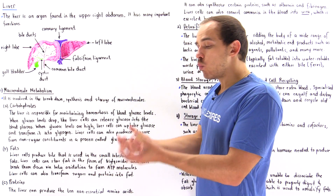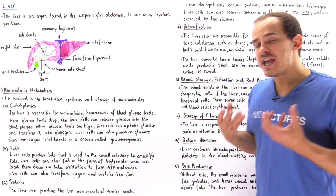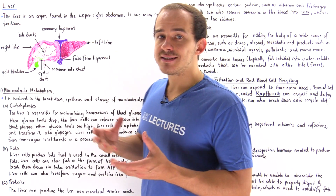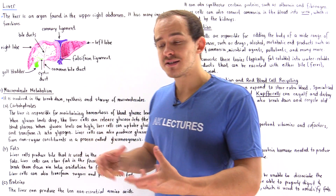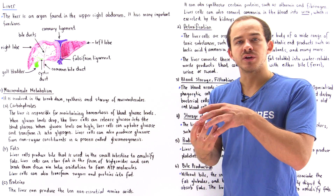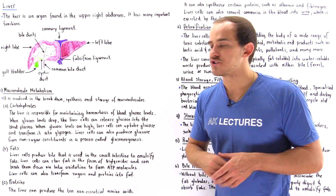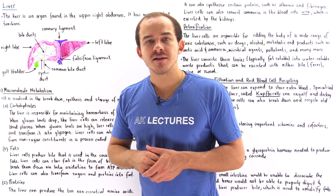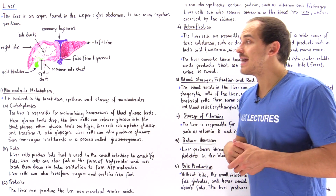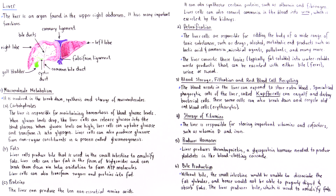When we ingest lipids or fats, they eventually end up in the small intestine. Because fats are hydrophobic, they aggregate to form large fat globules. The liver acts as an exocrine gland.